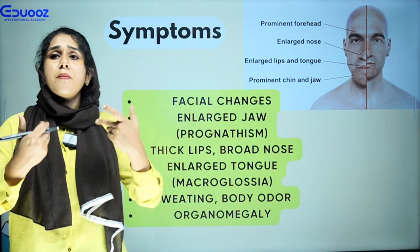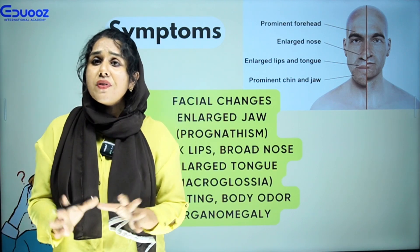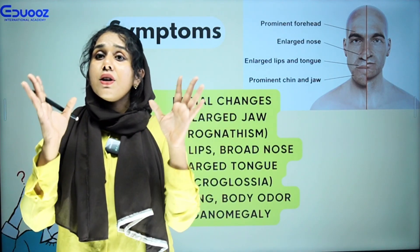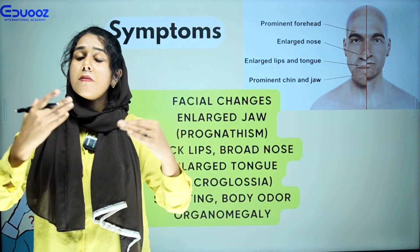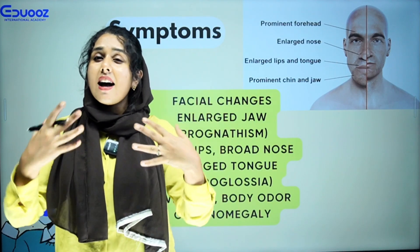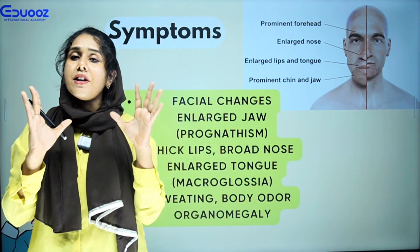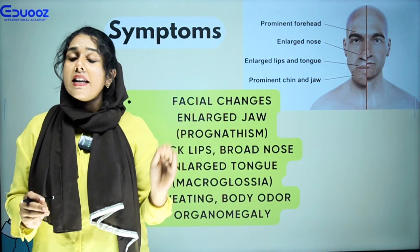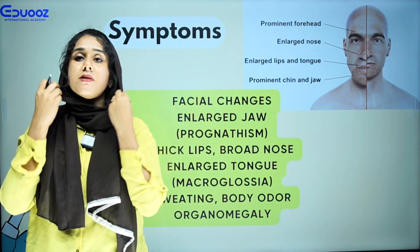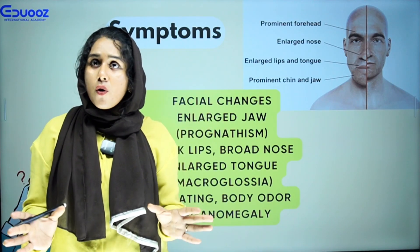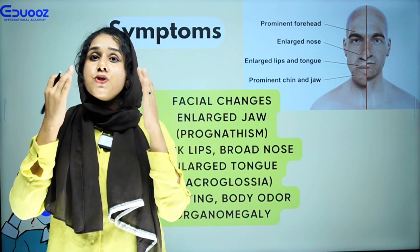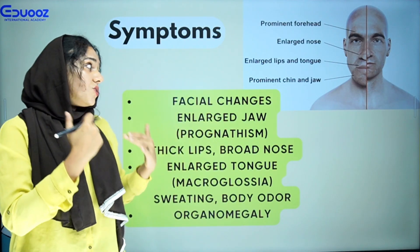Additional features include sweating and body odor. To summarize gigantism and acromegaly: with a little excess of growth hormone, we get acromegaly and gigantism. Features include a prominent forehead, enlarged nose, enlarged lips, and enlarged jaw.